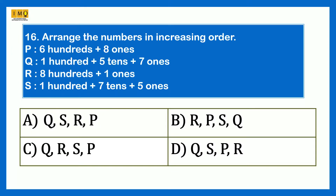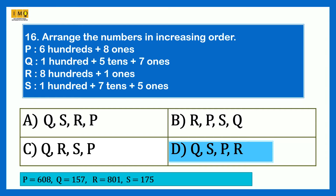Arrange the numbers P, Q, R, S in increasing order. P is 600 plus 8 ones = 608. Q is 100 plus 5 tens plus 7 ones = 157. R is 800 plus 1 one = 801. S is 100 plus 7 tens plus 5 ones = 175. Increasing order is small to big, so the answer is Q, S, P, R — that is 157, 175, 608, 801.